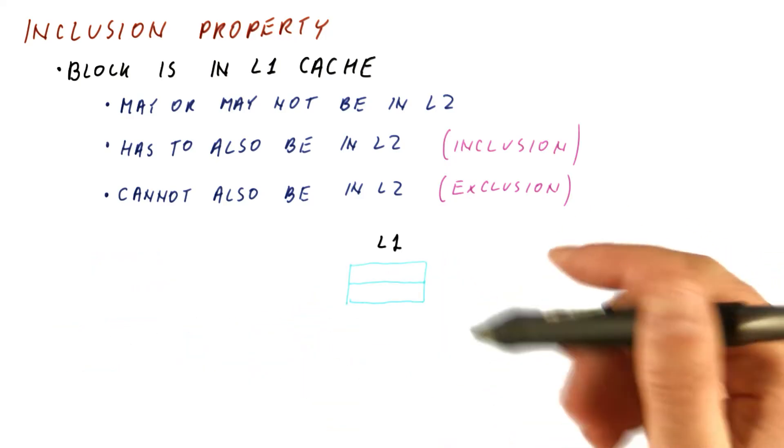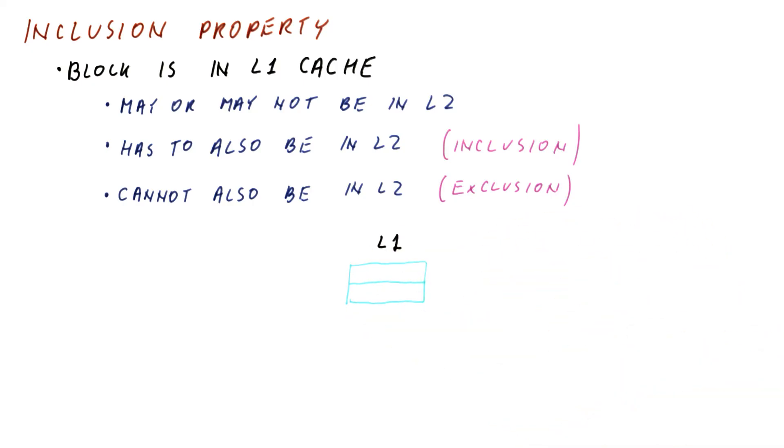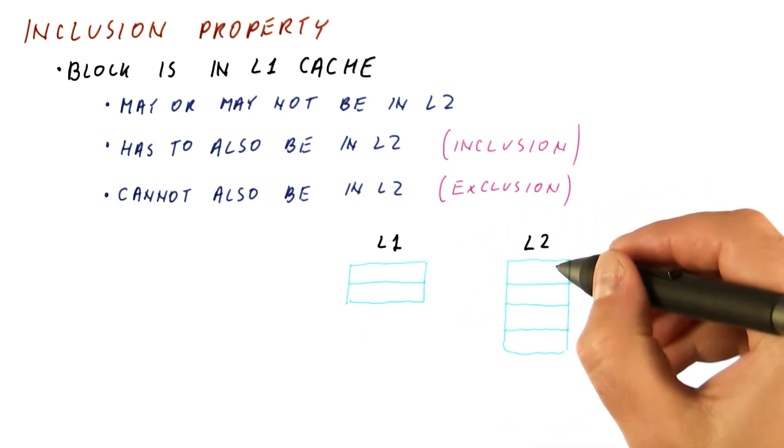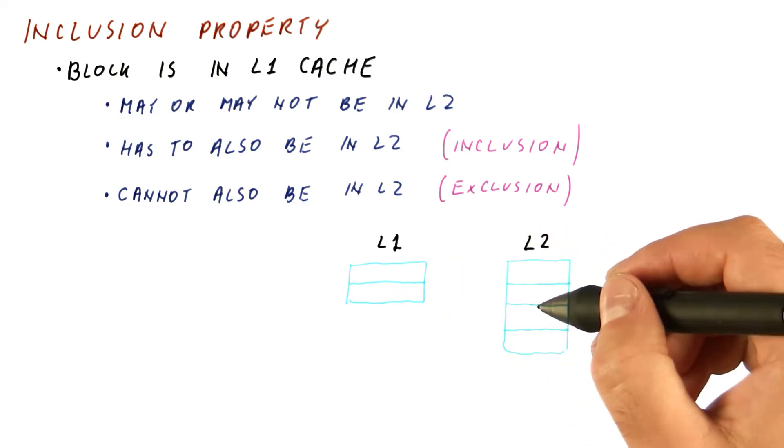Let's look at a simple example. When the L1 cache has two blocks and is fully associative, and the larger level two cache has four blocks and is fully associative, and both of them use LRU policy.